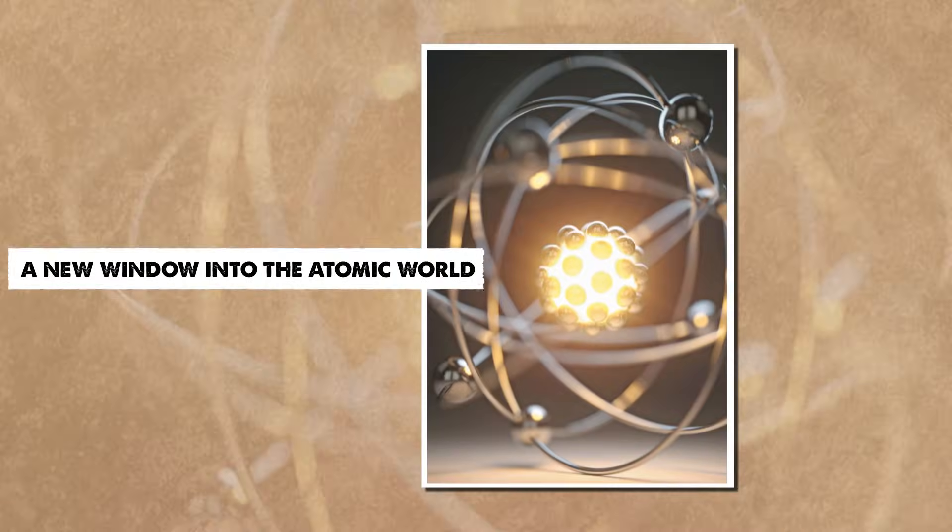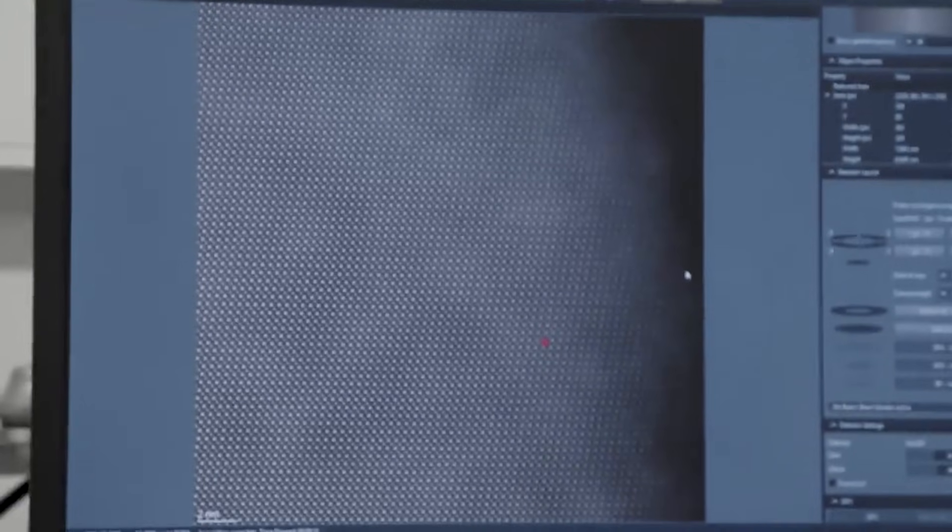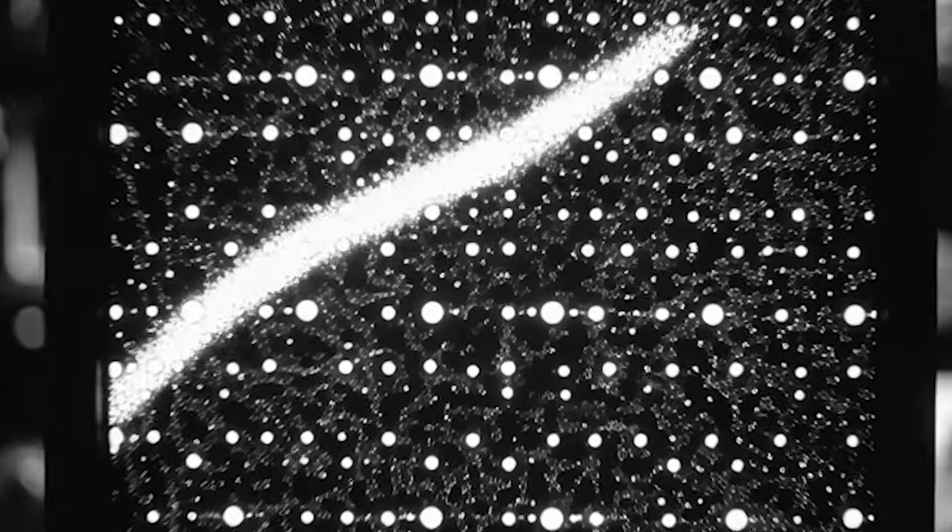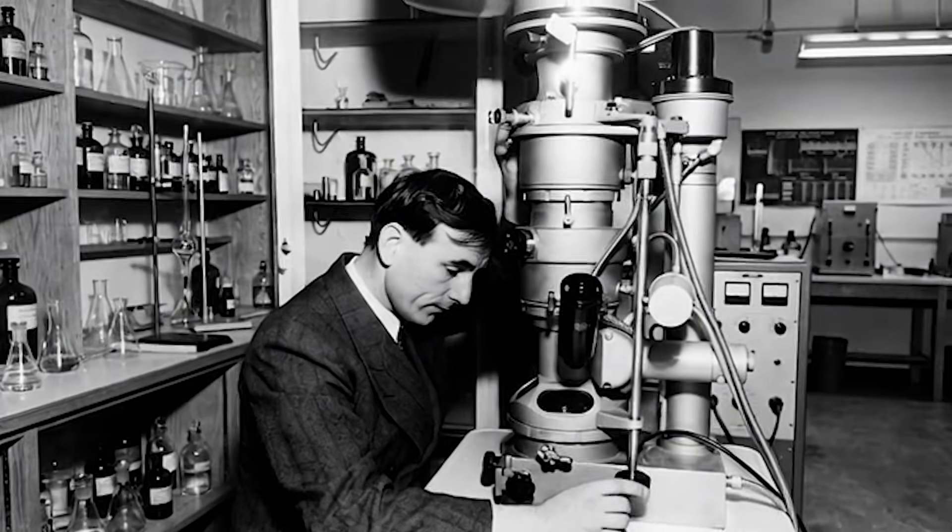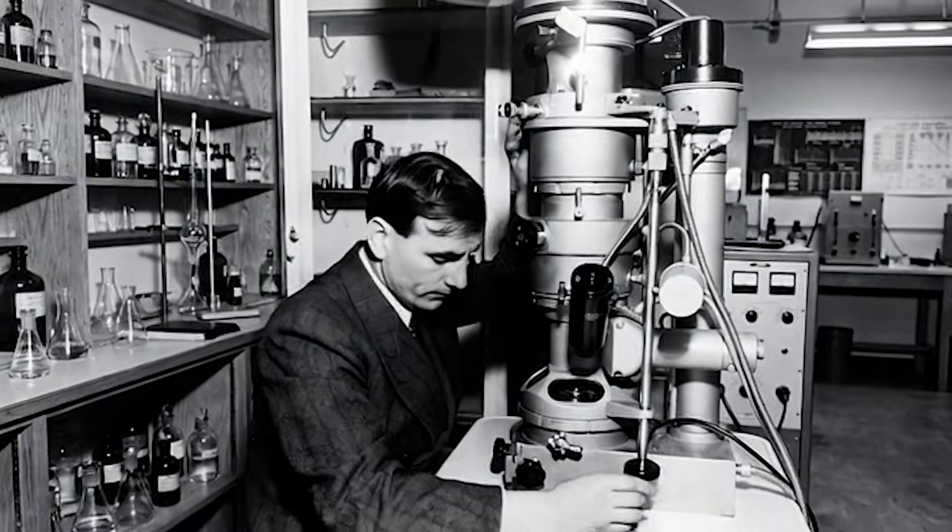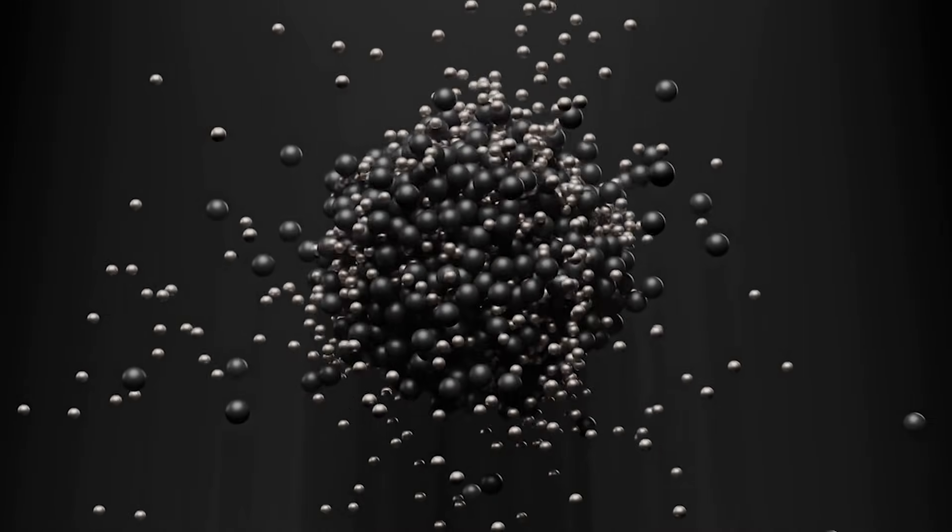A new window into the atomic world. With aberration correction in place, electron microscopy transformed overnight. Resolution dropped below 1 angstrom, letting scientists see atoms clearly and consistently. Scanning terms also gained correction, giving researchers the ability to map atoms one by one. Suddenly, fields like materials science, chemistry, and physics could observe structures they had only theorized before.